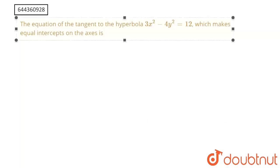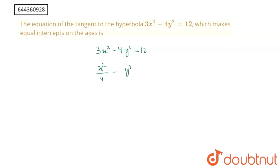We need to find the equation of the tangent. The equation of the hyperbola is 3x² minus 4y² = 12, which can be written as x²/4 minus y²/3 = 1. Therefore a² = 4, so a = 2, and b² = 3, so b = √3.